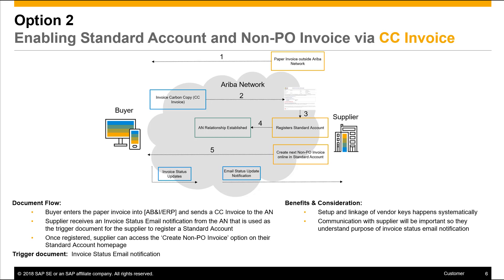In this scenario, the document flow is as follows: the buyer will enter the paper invoice either into Ariba Buying and Invoicing or into their ERP and send a CC invoice to the Ariba network. The supplier then receives an invoice status email notification from the CC invoice that is used as a trigger document for the supplier to register a standard account.